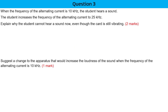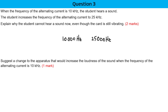Question 3. When the frequency of the alternating current is 10 kHz, the student hears a sound — that's 10,000 Hz. But when he increased the frequency to 25 kHz, which is 25,000 Hz, the student cannot hear a sound now, even though the card is still vibrating.